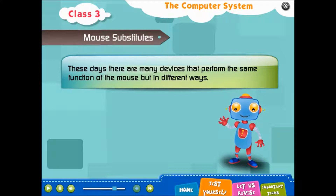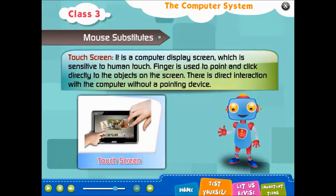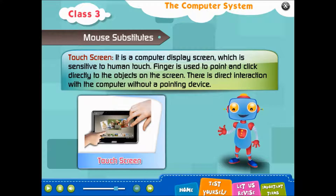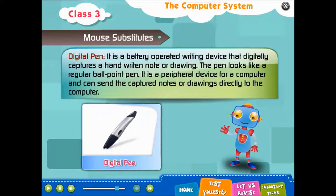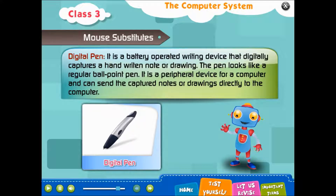These days there are many devices that perform the same function as the mouse but in different ways. Touch Screen is a computer display screen which is sensitive to human touch. A finger is used to point and click directly to objects on the screen, allowing direct interaction with the computer without a pointing device. A Digital Pen is a battery-operated writing device that digitally captures handwritten notes or drawings. It looks like a regular ballpoint pen and can send the captured notes or drawings directly to the computer.